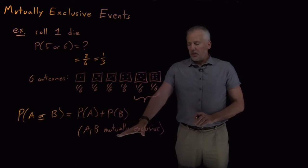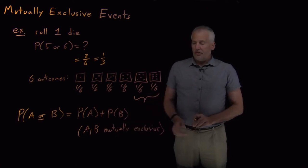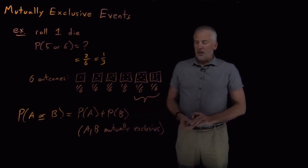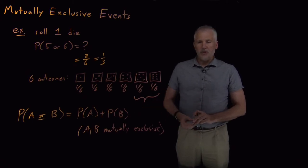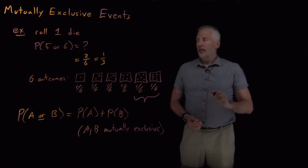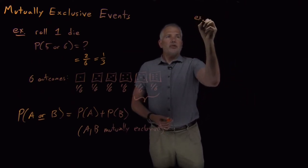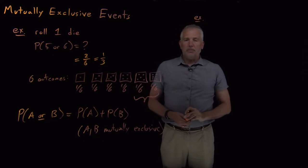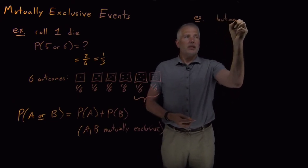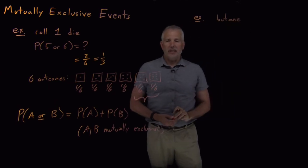So introducing this terminology mutually exclusive and introducing an equation seems like it's made things a little more complicated than they needed to be for something we could have just answered without any equations. But when we move on and study problems that are more about chemistry and less about simple things like cards and dice then it's useful to have these equations and terminology to fall back on. Just to do one example of something that's more like a chemistry problem rather than a dice problem. And it will be equivalently easy as the dice problem.